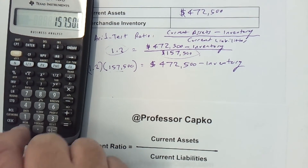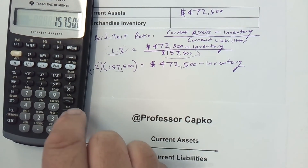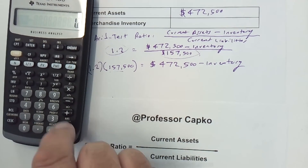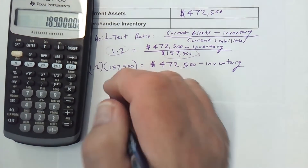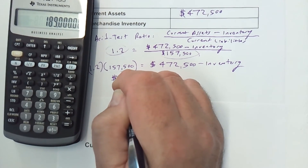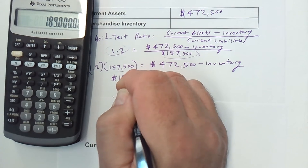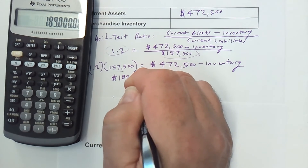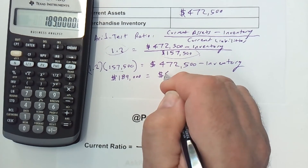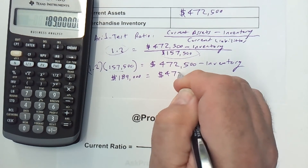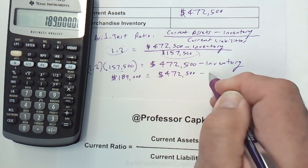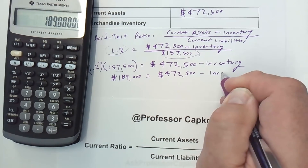1.2 times 157,500 equals 189,000. So: 189,000 equals 472,500 minus inventory.